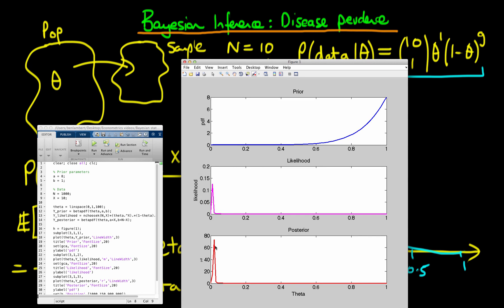And this becomes even more pertinent as I increase the amount of data. So now I've got 1000 individuals in our sample, I've only got 10 individuals who've got the disease.